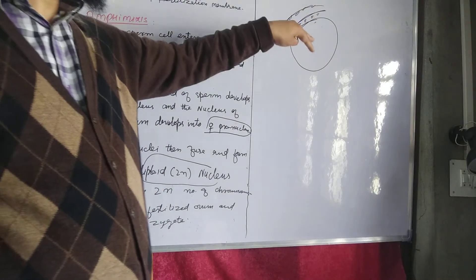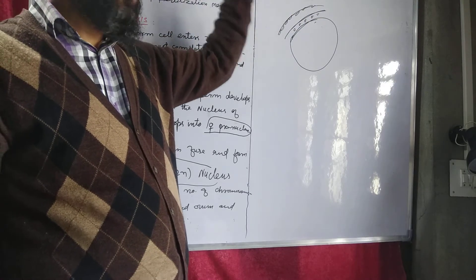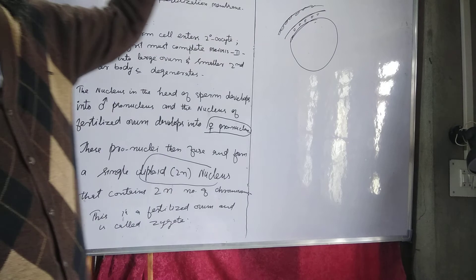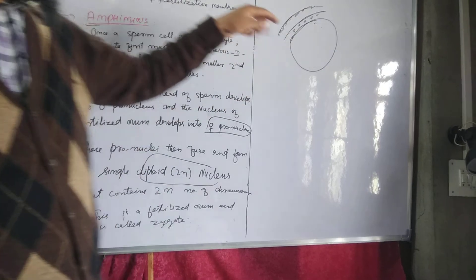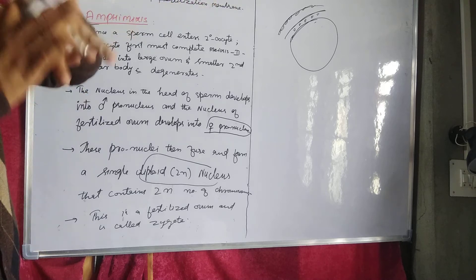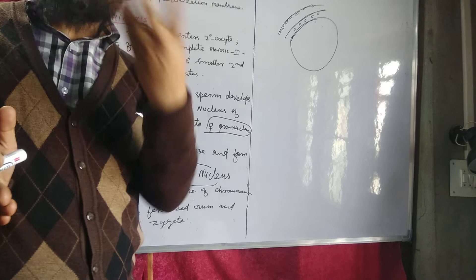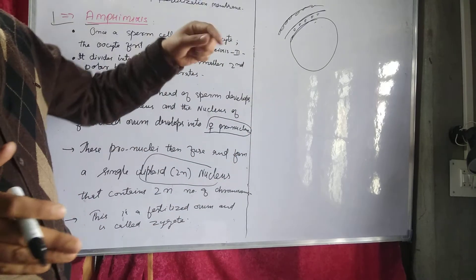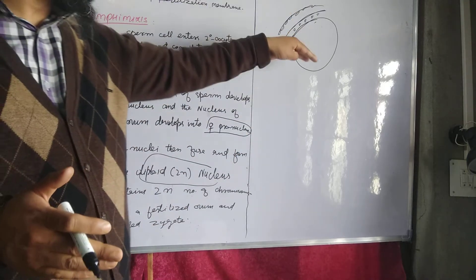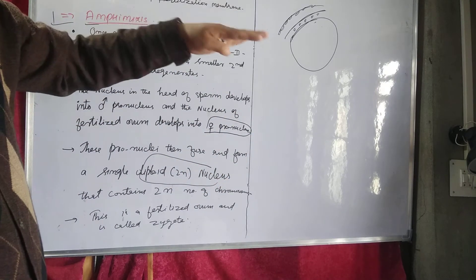There are many barriers in this cell. The sperm needs to cross these barriers, so we have to block polyspermia.